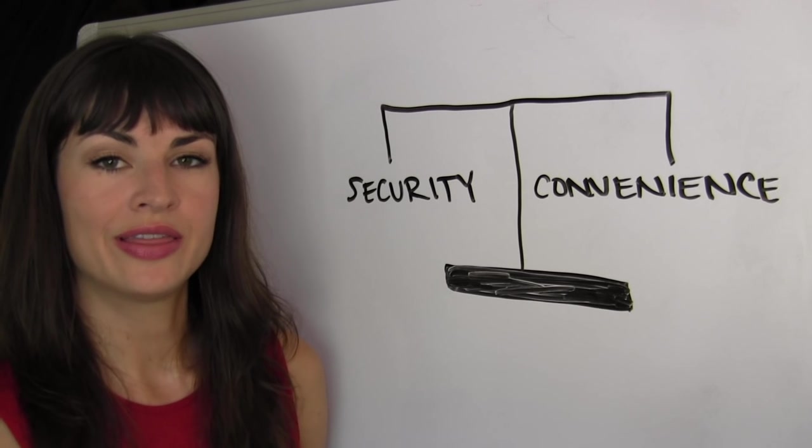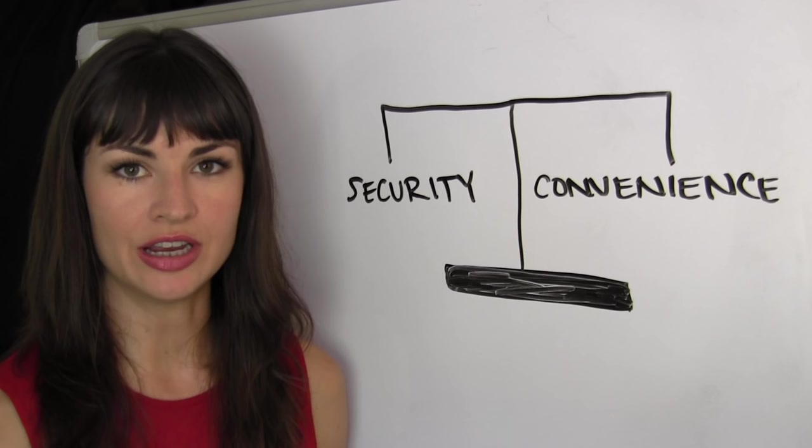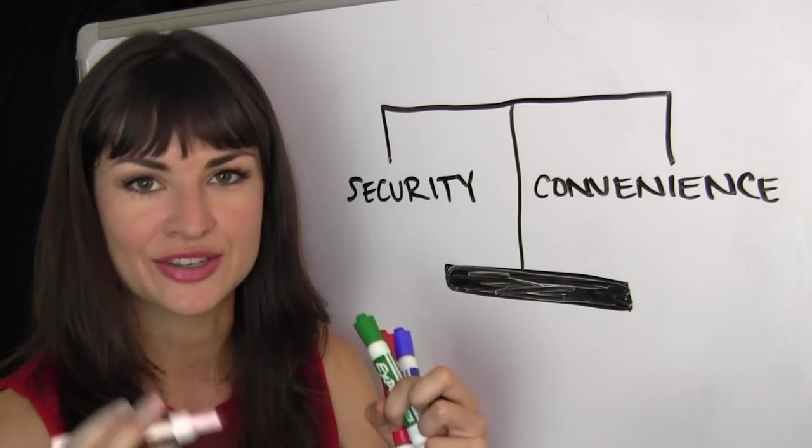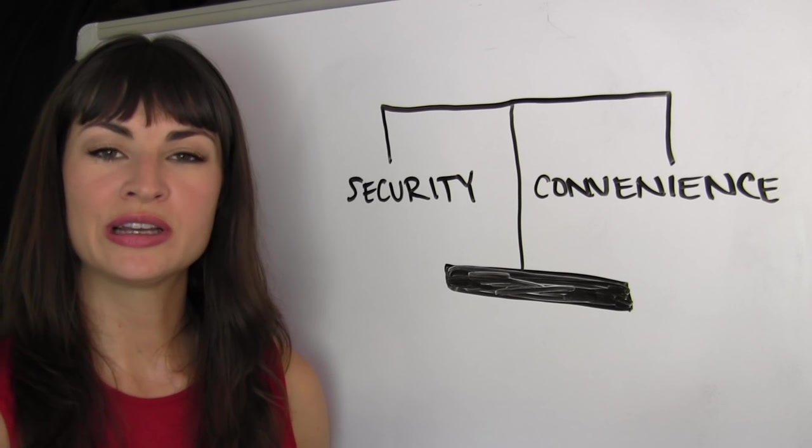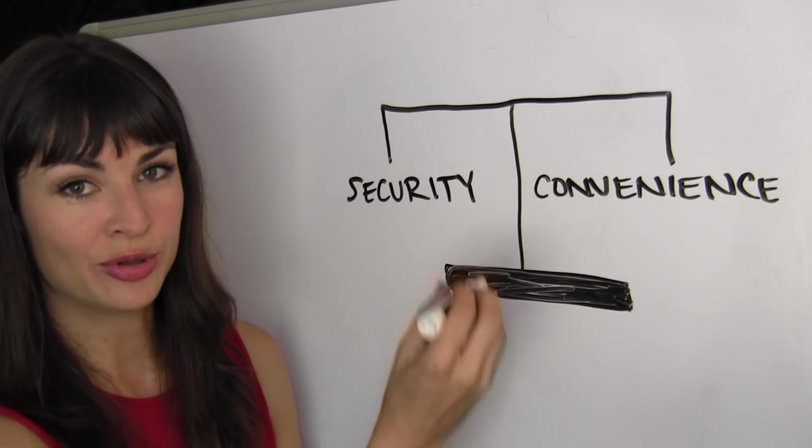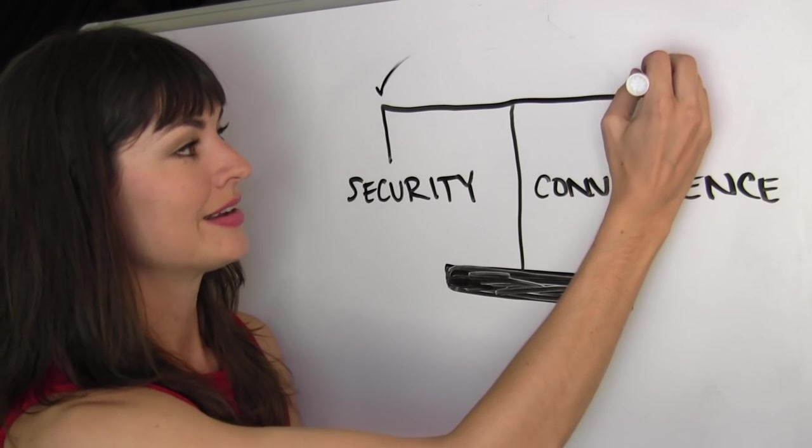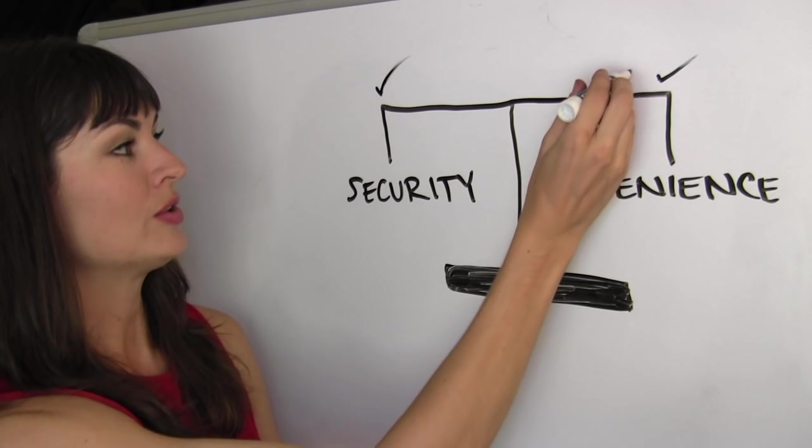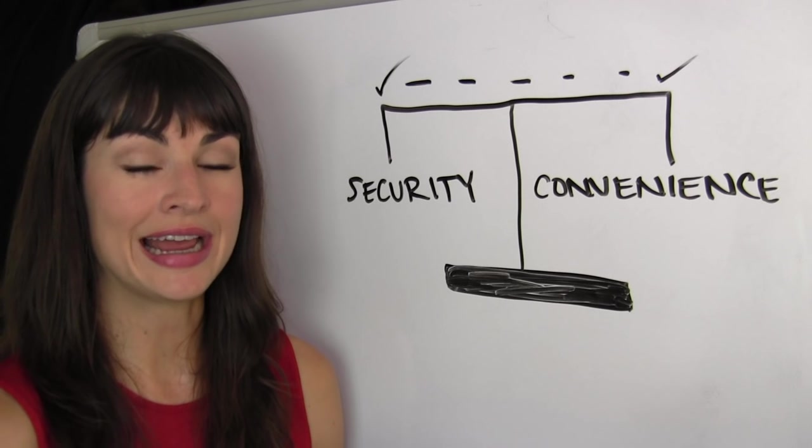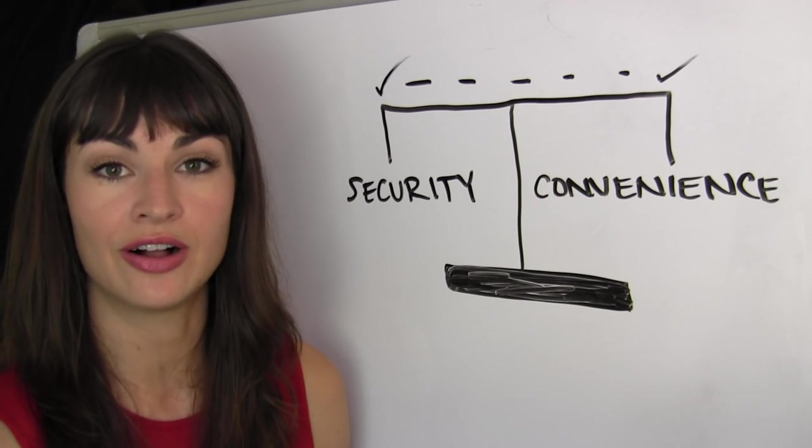It's a truism that there's always a trade-off between security and convenience. The more of one you have, the less of the other you have, and vice versa. At Dash, we realize that the world has customers across this entire spectrum. Some people want maximum this, some people want maximum this, and everyone else falls somewhere in between. The release of Evolution means that Dash will have products to suit people regardless of where they fall on the spectrum.